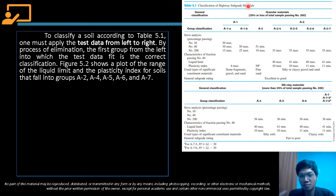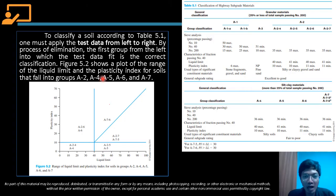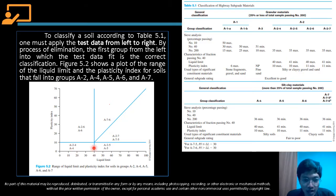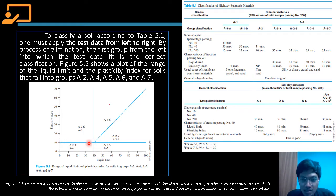Figure 5.2 shows a plot of the range of liquid limit and plasticity index for soils in groups A2, A4, A5, A6, and A7. For example, A2-4 has a maximum liquid limit of 40 and maximum plasticity index of 10. A4 has the same values. For in-between values — such as a plasticity index of 10.5 or liquid limit of 40.7 — we round to the nearest whole number.